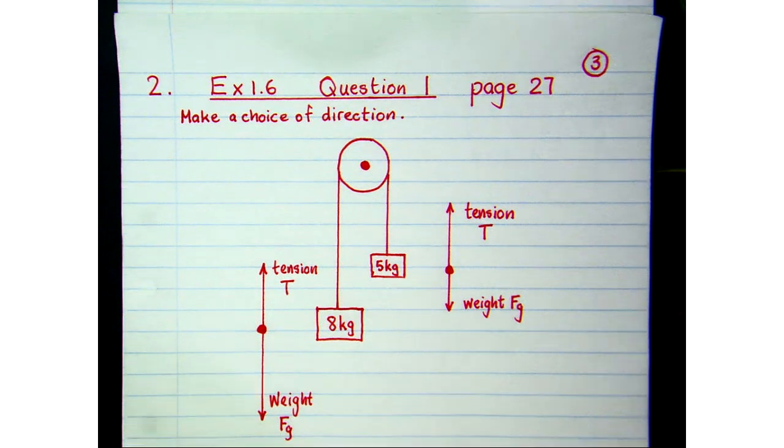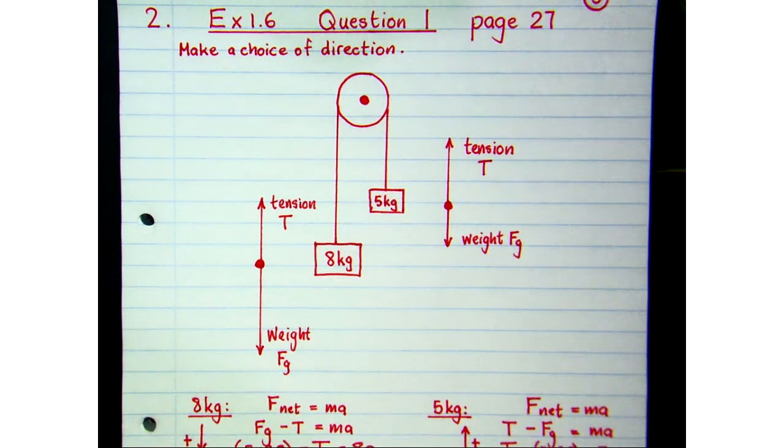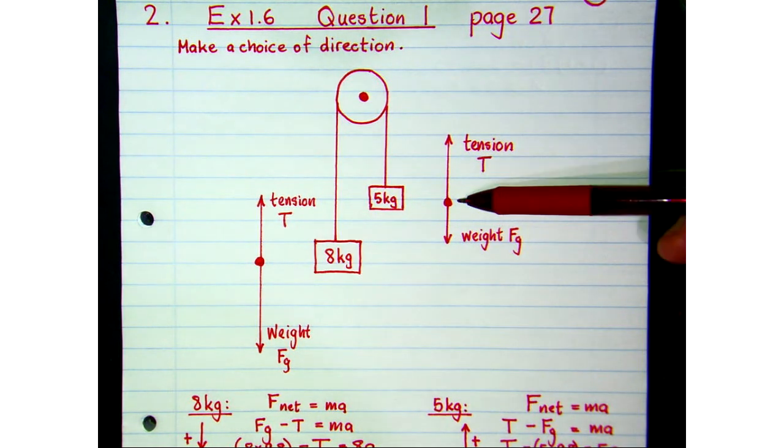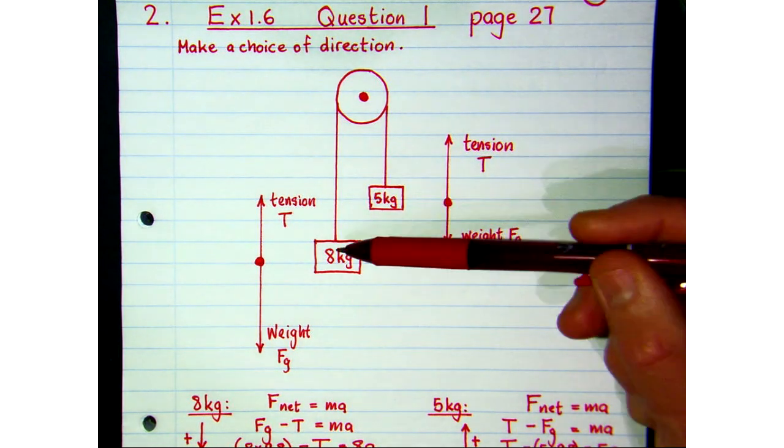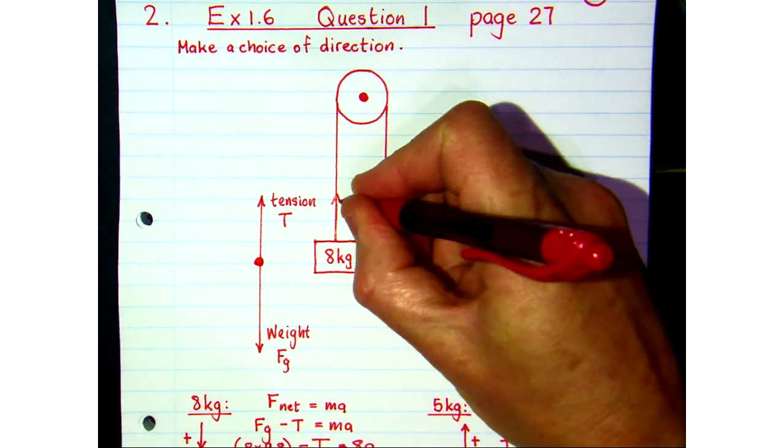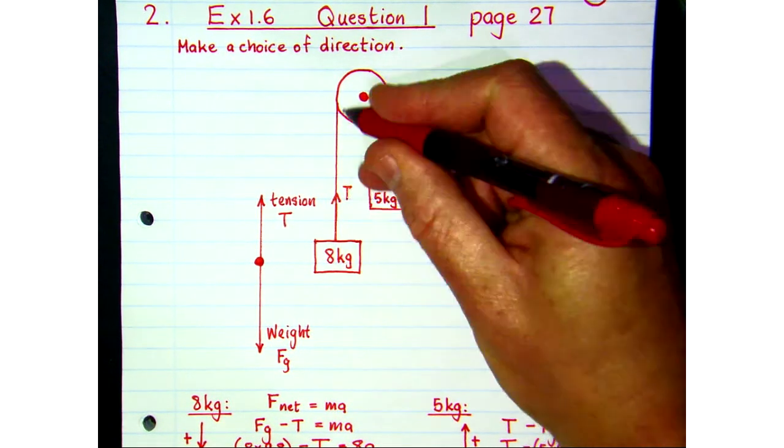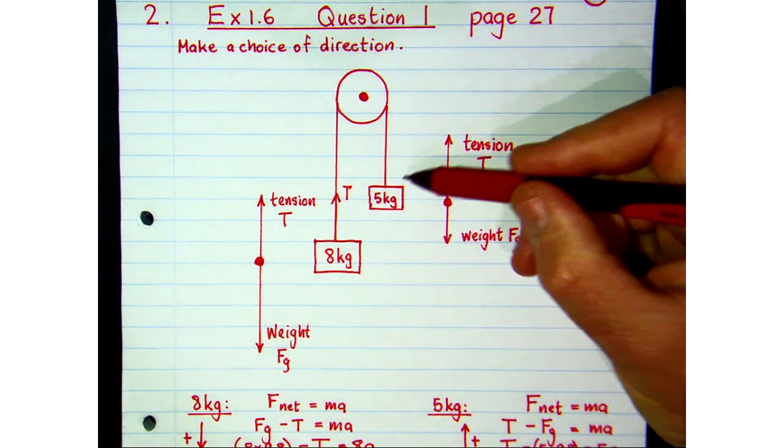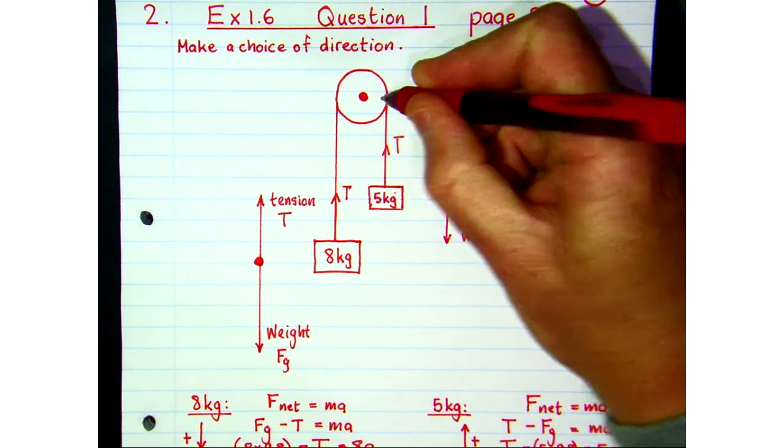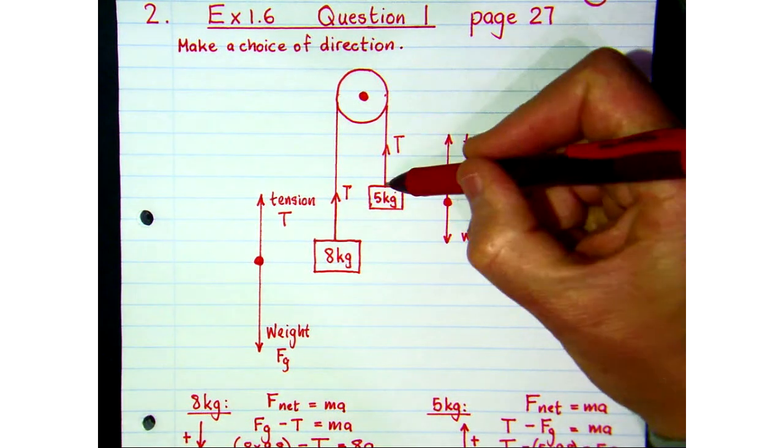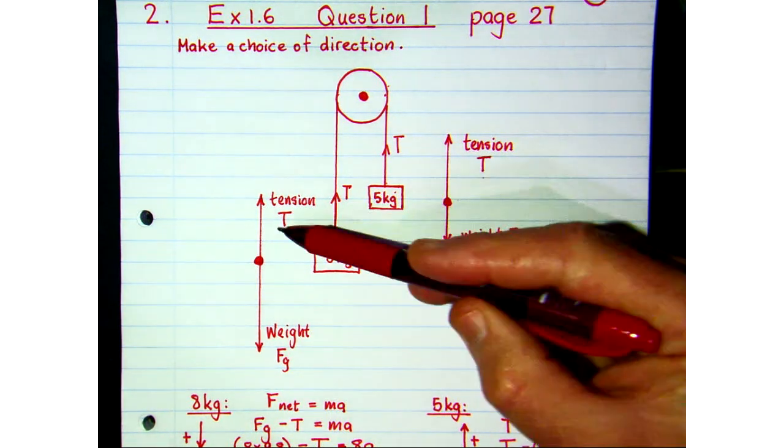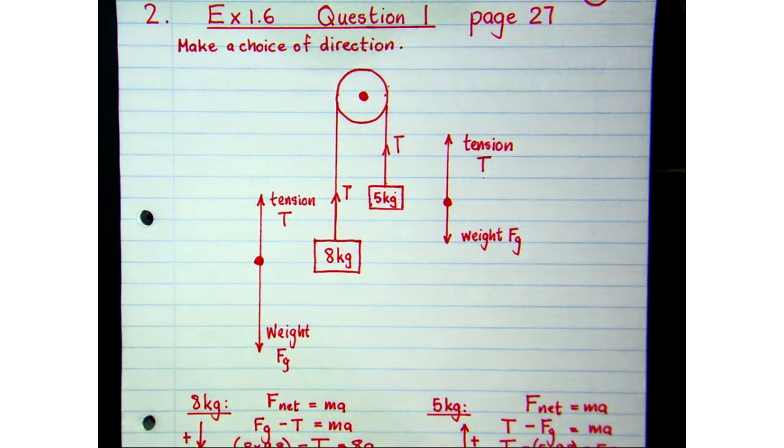Okay, since you've tried that, you would have realized that you need to draw free body diagrams for each block. And if you look at the 8 kg, it's got a tension force acting up in the string towards the pulley. Similarly, the 5 kg also has that same tension force acting up towards the pulley. Tension forces always act towards the pulley. So both free body diagrams would have the same tension force acting up.